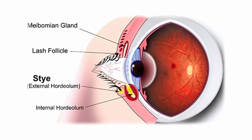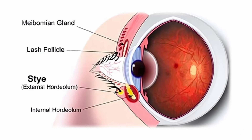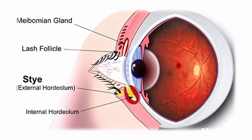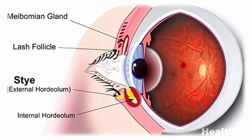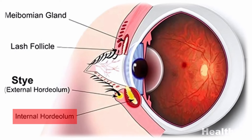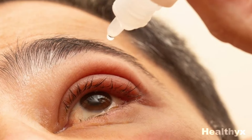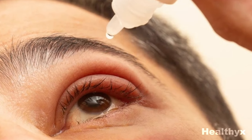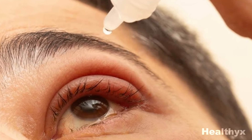A sty may also occur under the eyelid, as there are oil gland openings there as well. When this happens, it is called an internal hordeolum. These sties are treated in the same way as those you find along the edge of your eyelid.